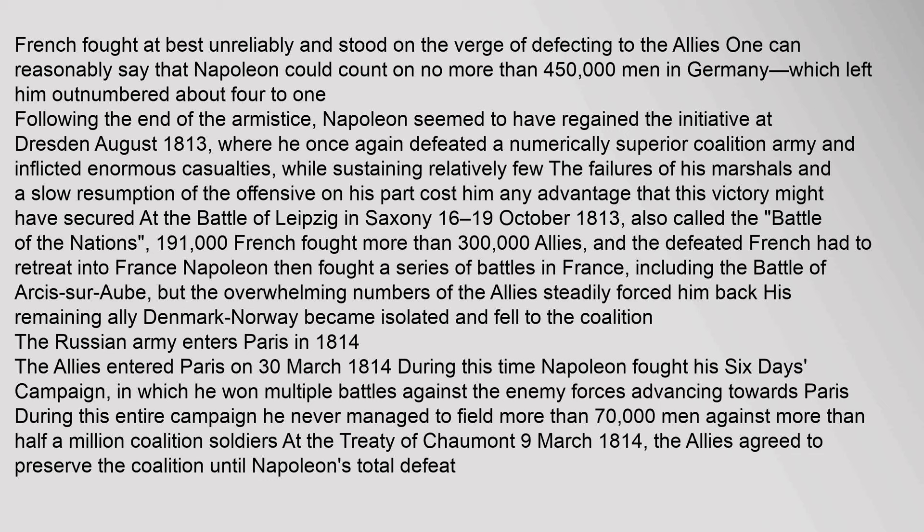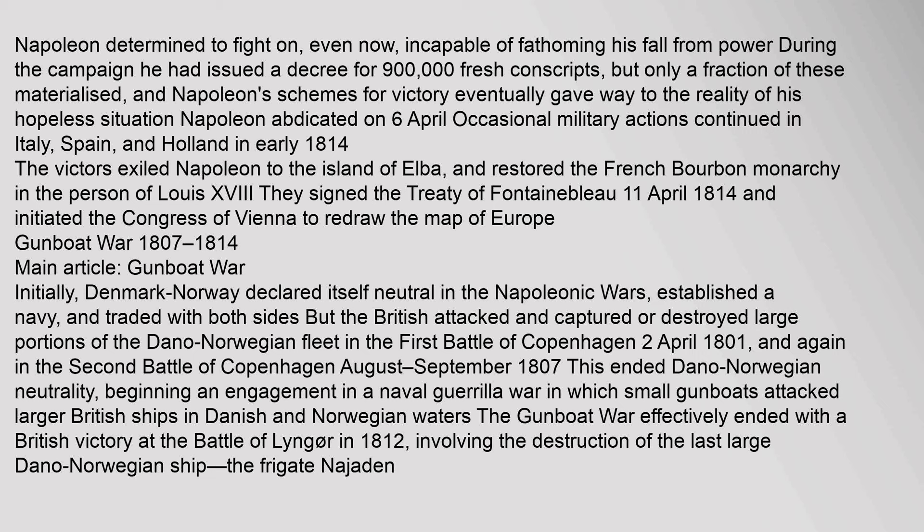During Napoleon's Six Days campaign, he won multiple battles against the enemy forces advancing towards Paris, but never managed to field more than 70,000 men against more than half a million coalition soldiers. At the Treaty of Chaumont on 9 March 1814, the allies agreed to preserve the coalition until Napoleon's total defeat. Napoleon had issued a decree for 900,000 fresh conscripts, but only a fraction materialized. Napoleon abdicated on 6 April 1814. The victors exiled Napoleon to the island of Elba and restored the French Bourbon monarchy in the person of Louis XVIII, signing the Treaty of Fontainebleau and initiating the Congress of Vienna to redraw the map of Europe.